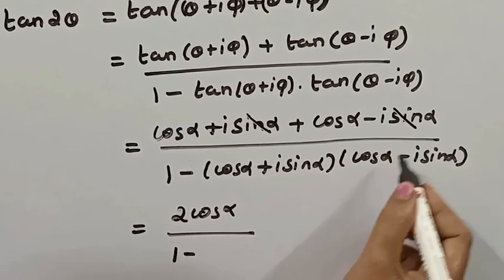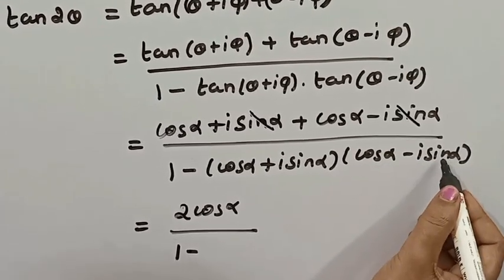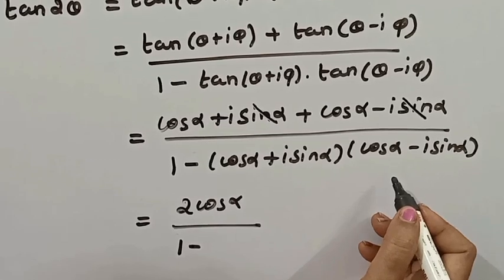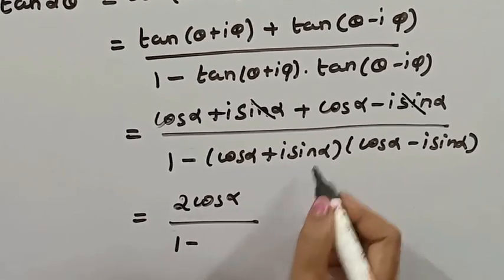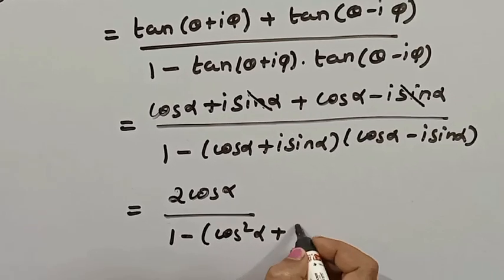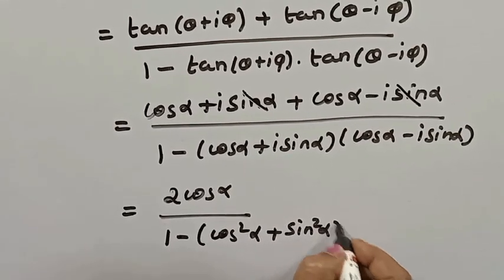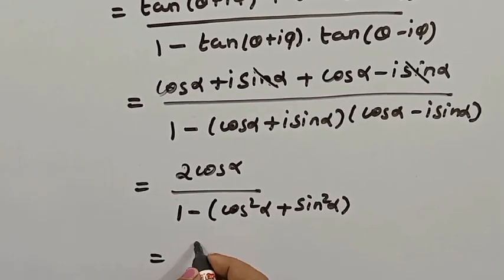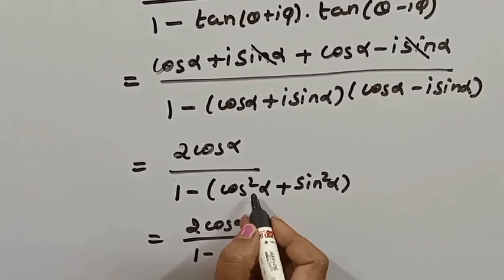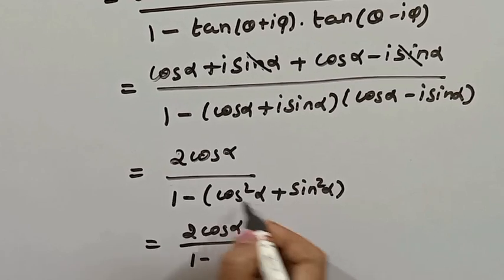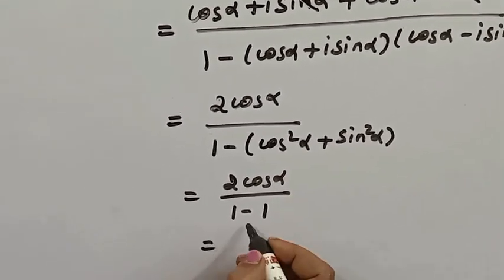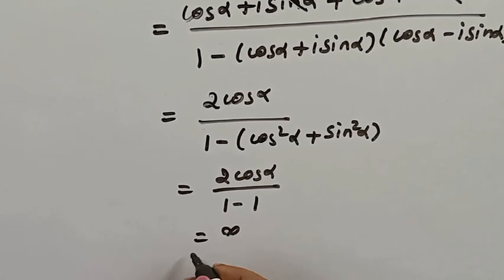In the denominator, (cos α + i sin α)(cos α - i sin α) = a² + b², where a = cos α and b = sin α. So the denominator becomes 1 - (cos²α + sin²α) = 1 - 1 = 0. Therefore tan(2θ) = 2 cos α / 0, which equals infinity.